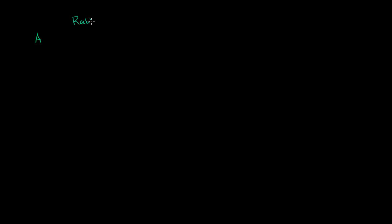Let's think about all of the scenarios. First, let's call this scenario A. The number of rabbits you can get, and the number of berries you can get. If you were to spend your entire day going after rabbits, you can get five rabbits on average in a given day. But if you spend all your time getting rabbits, you're not going to have any time to get berries — so zero berries.